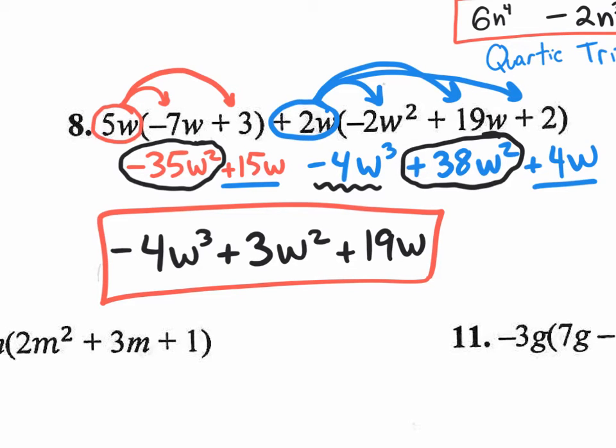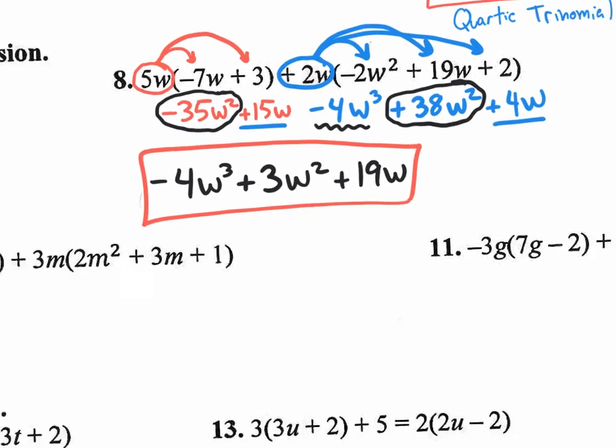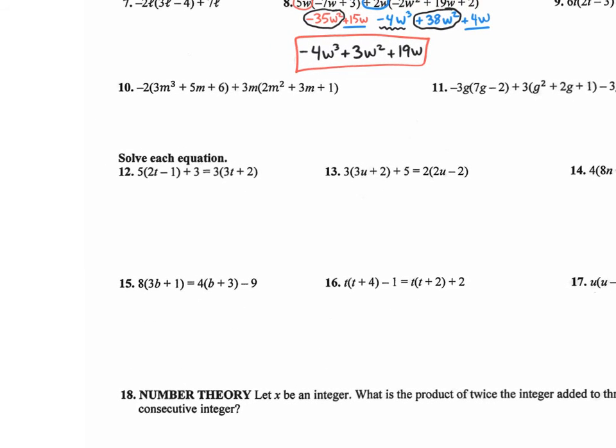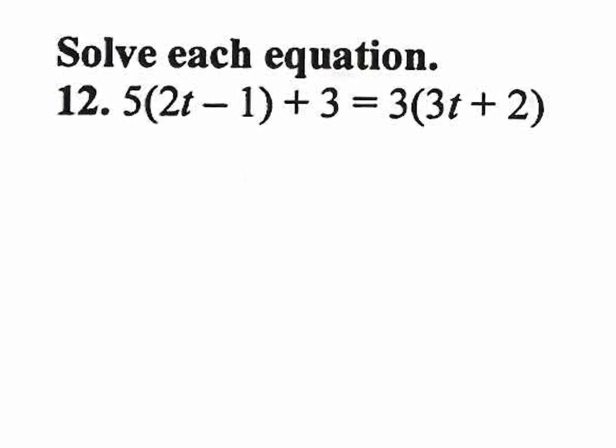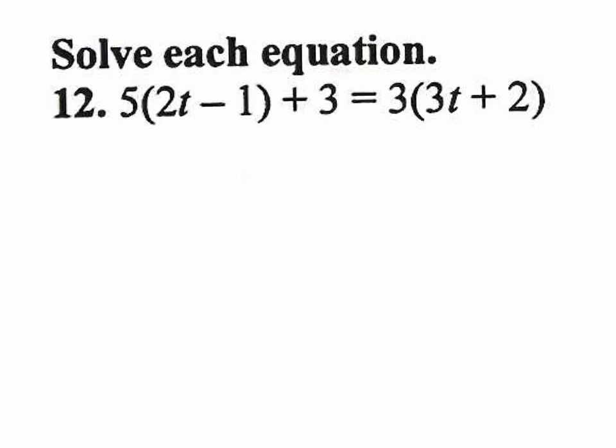So just a little review. On the first part of the homework, you were distributing. On the second part of the homework, you're still distributing. But then after that, you combine like terms. And of course, the third part of the homework, that's where we have equations. And that's where you distribute, you combine like terms, and then you solve at the very end. Right?